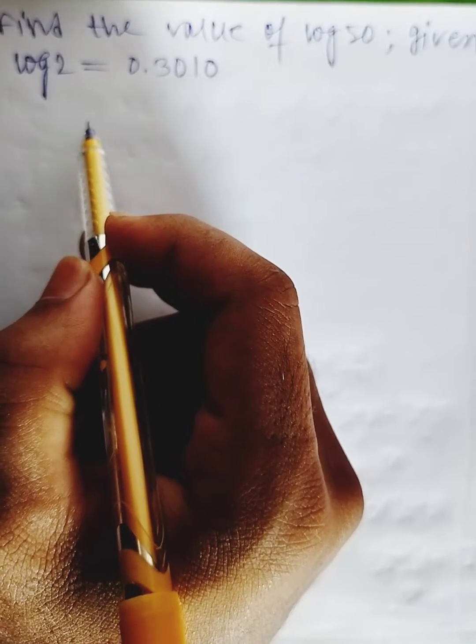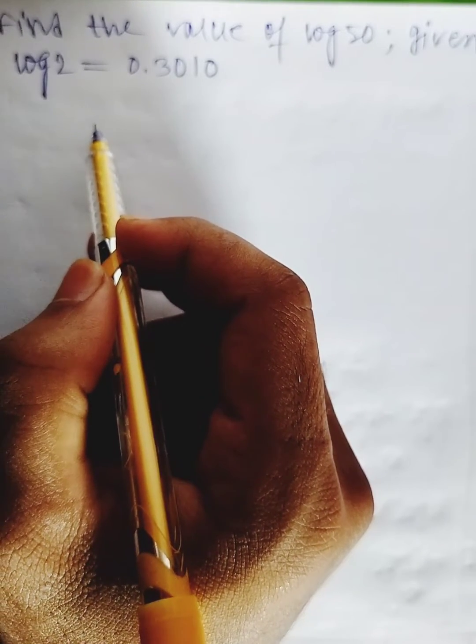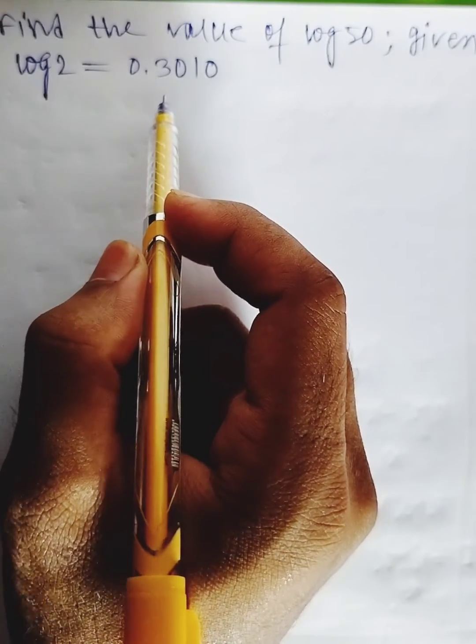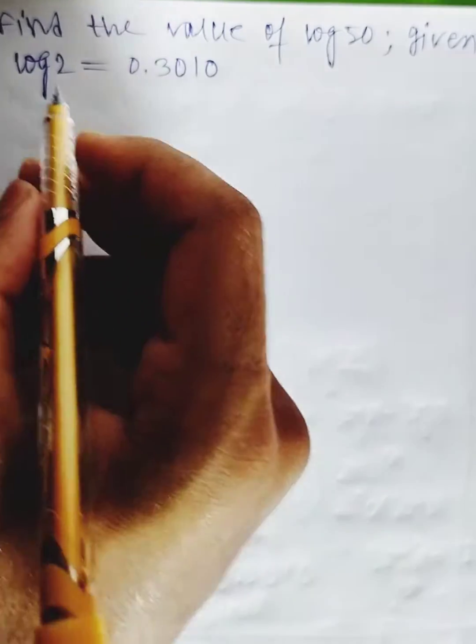Here our question is find the value of log 50 given log 2 equals 0.3010. Let's try to find out.